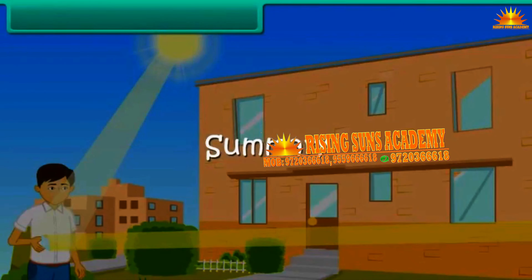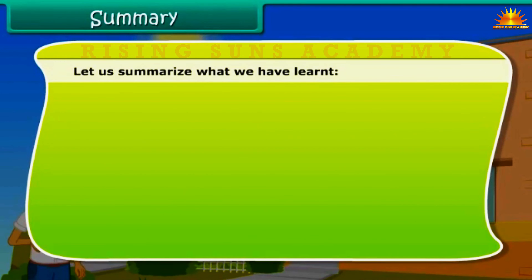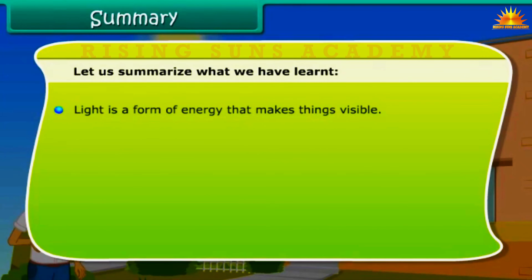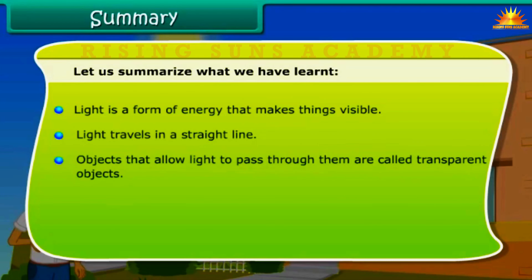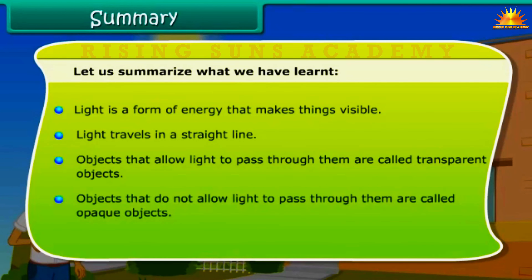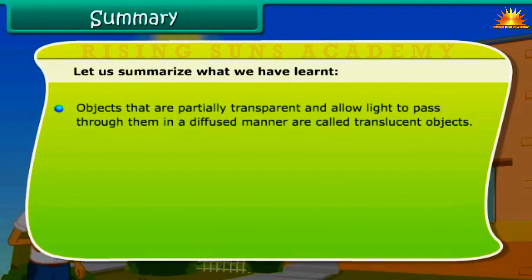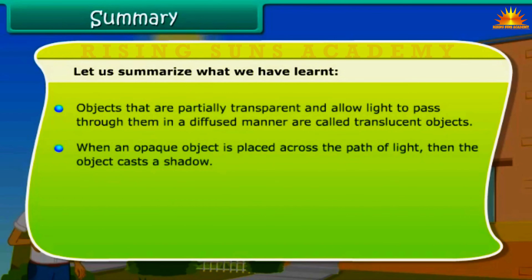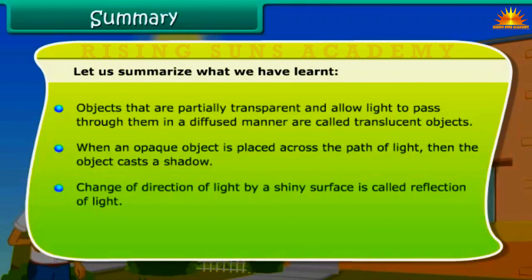Let us summarize what we have learned. Light is a form of energy that makes things visible. Light travels in a straight line. Objects that allow light to pass through them are called transparent objects. Objects that do not allow light to pass through them are called opaque objects. Objects that are partially transparent and allow light to pass through them in a diffused manner are called translucent objects. When an opaque object is placed across the path of light, the object casts a shadow. Change of direction of light by a shiny surface is called reflection of light.